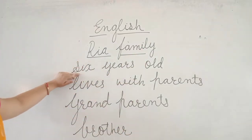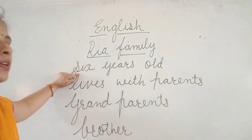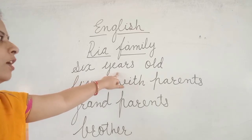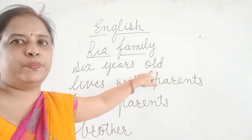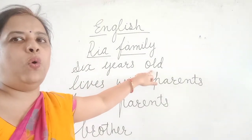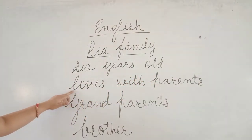Next word is six. S-I-X, six. Years: Y-E-A-R-S, years. Old: O-L-D, old. Lives: L-I-V-E-S, lives.